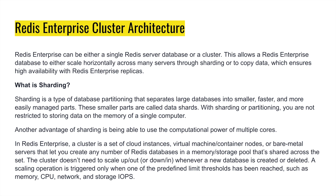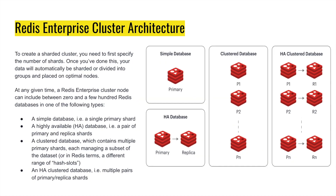This is the Redis Enterprise Cluster architecture covering memory, CPU, network, and storage I/O. To create a sharded cluster, you first need to specify the number of shards, and once done, your data will automatically be shared or divided into groups placed at optimal nodes. The Redis Enterprise Cluster node can include zero or a few hundred Redis databases.